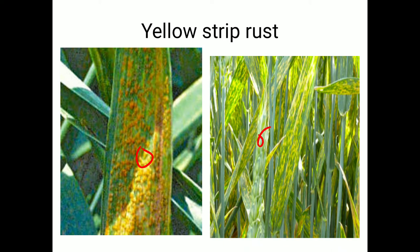The third rust is brown leaf rust. Regarding symptoms, leaves are heavily affected more than the leaf sheath and stalks. Uredospores in brown leaf rust are small but often larger than those of yellow rust. Uredospores are bright orange in color and turn brown when mature. The alternate host of brown leaf rust is Thylactrum polygranum.